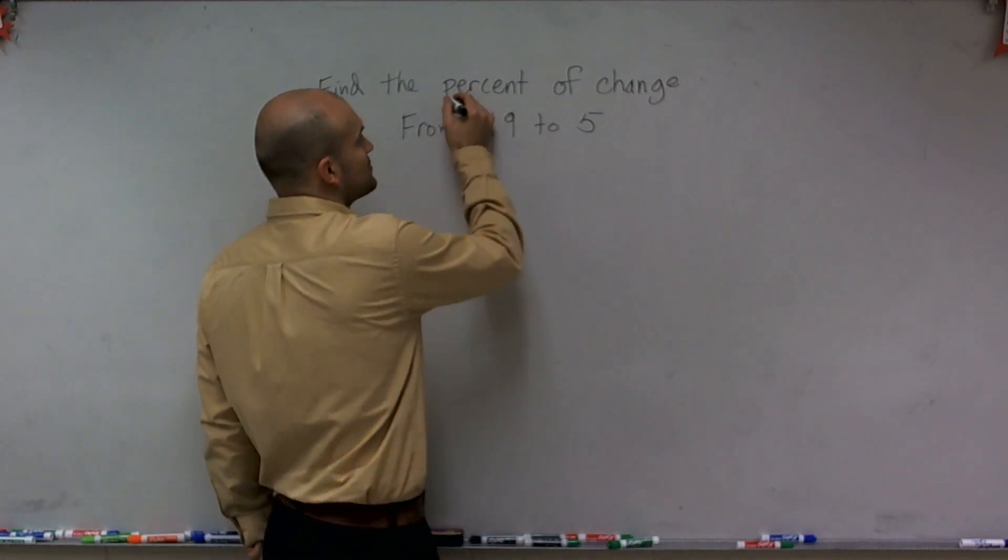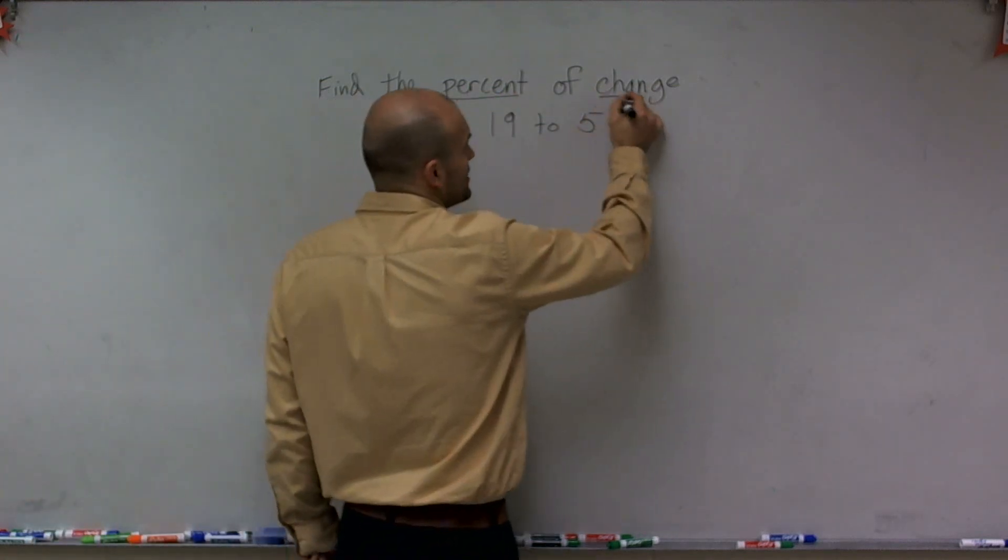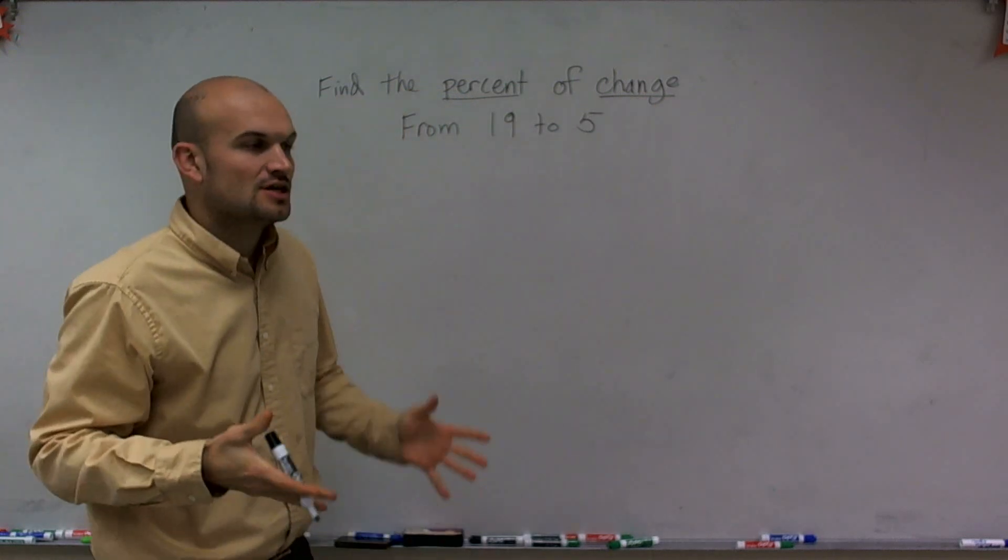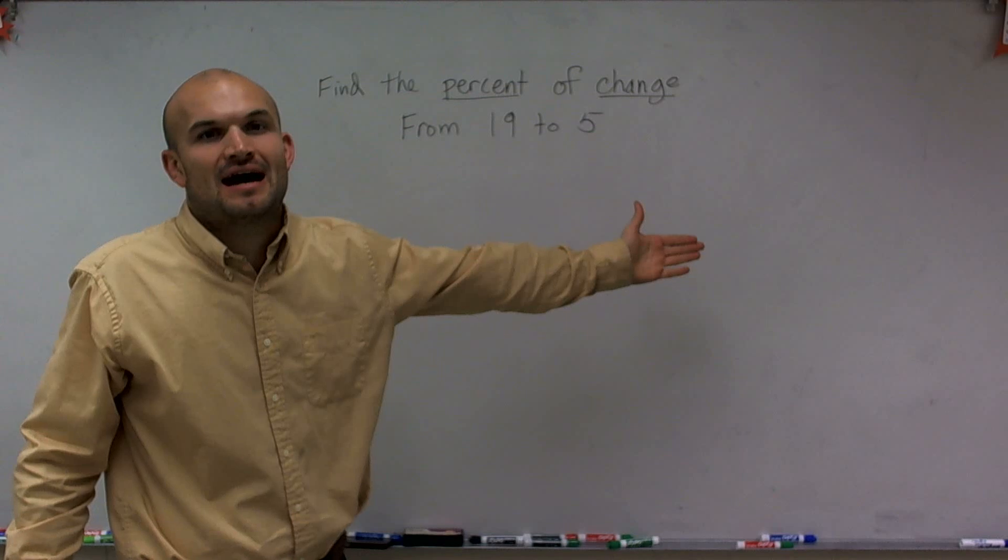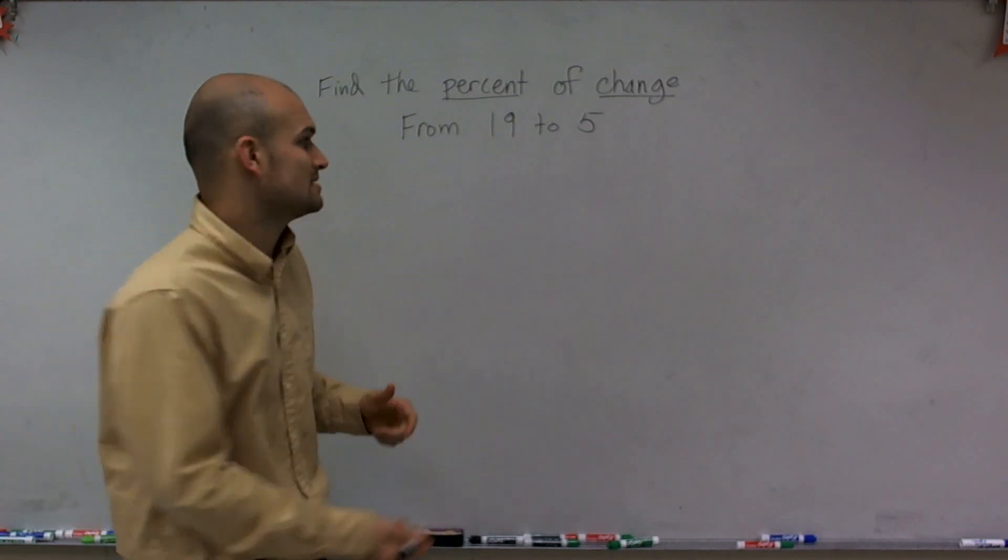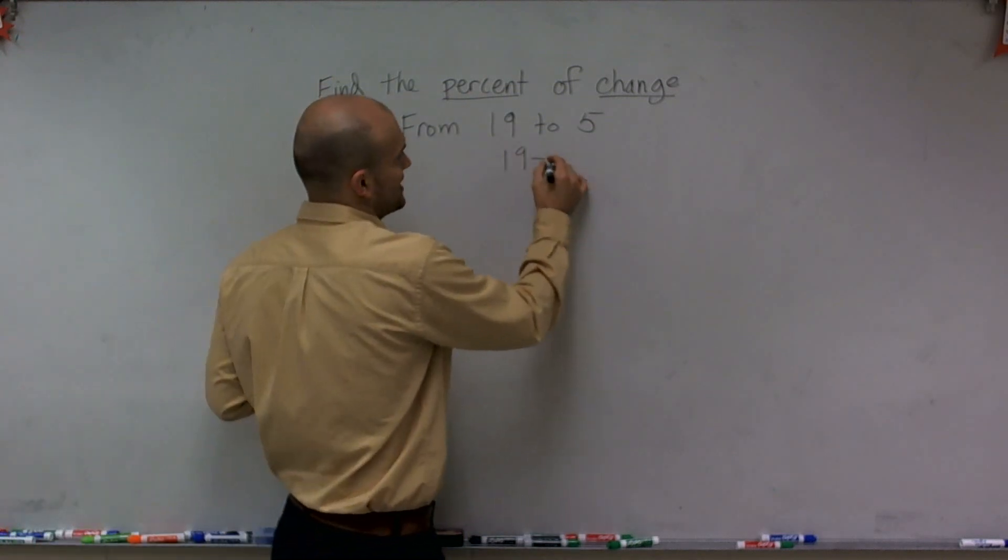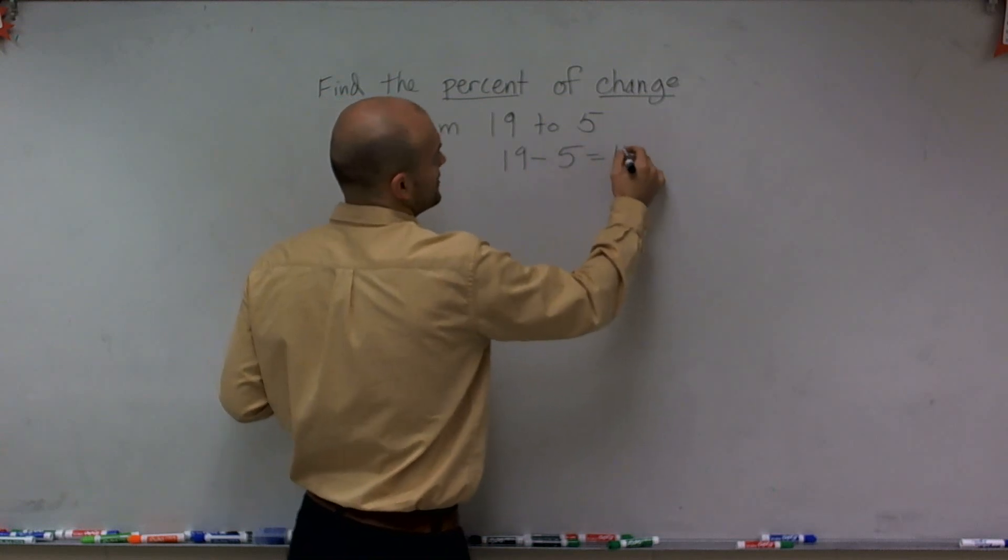Now the really important thing that we're looking at is we need to be able to find the percent and we also want to find the change. So first of all, we need to say what is the change from 19 to 5? To find the change, what they're really asking us is the difference. So to find the change, I can simply say 19 minus 5 is going to be 14.